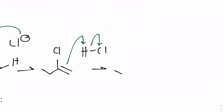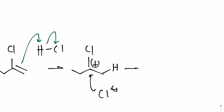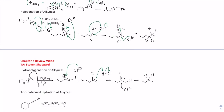With the second equivalent of HCl, the pi bond again grabs the proton, generating the chloride and a carbocation following Markovnikov's rule. The chloride attacks to give the final geminal dichloride product. This mechanism mimics alkenes pretty well, so it shouldn't be too difficult.